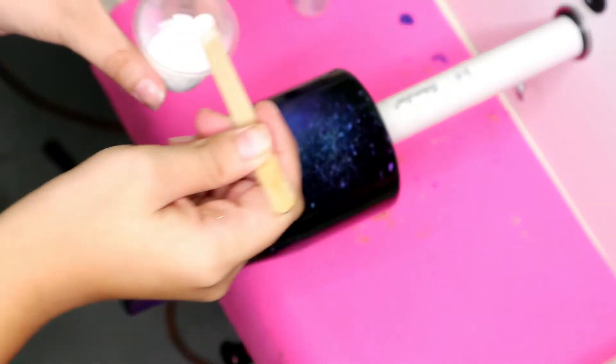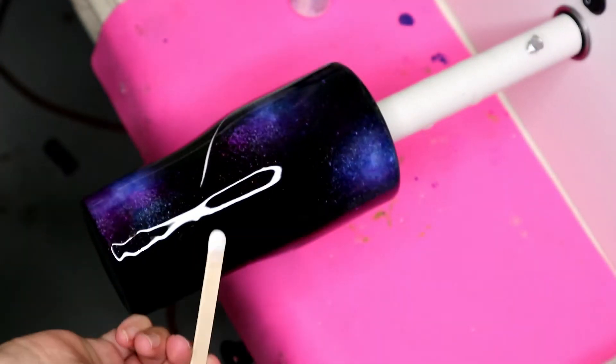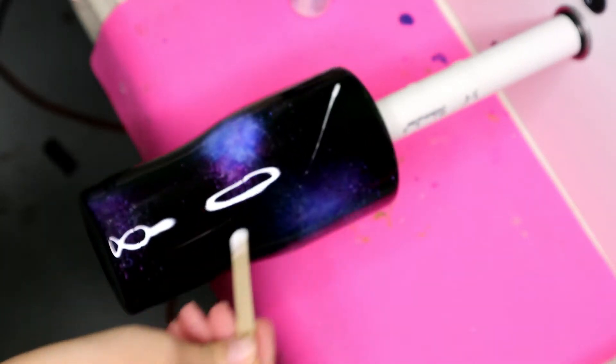I used the white epoxy pigment from Armor Art. You can get that from CCDIY as well. And I just mixed up a tiny bit that I poured from my mixing cup of artist resin.